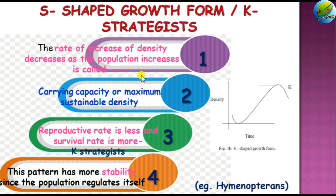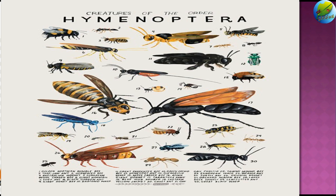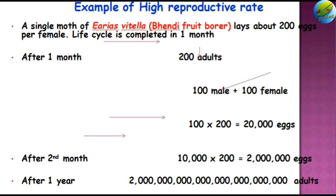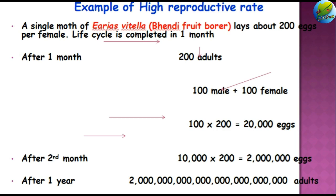In case of the J-shaped growth form, there is no such stability. Examples of the S-shaped growth form or K-strategists are Hymenopterans. Aphids are J-shaped growth form or R-strategists, as discussed in the previous class. The example of Erias vitella discussed in the previous class is also an R-strategist.